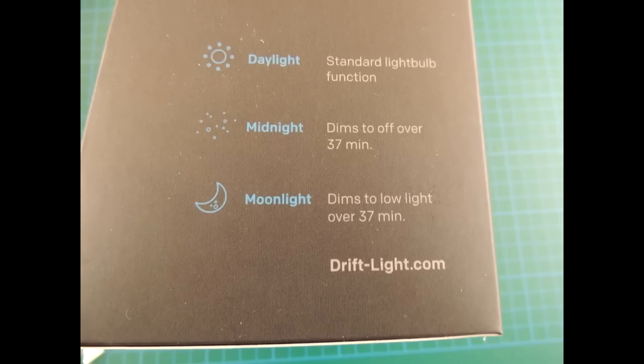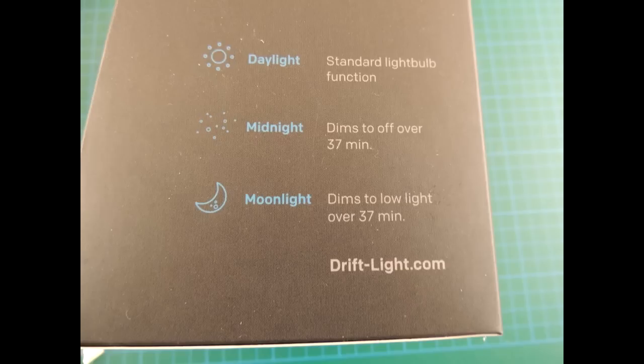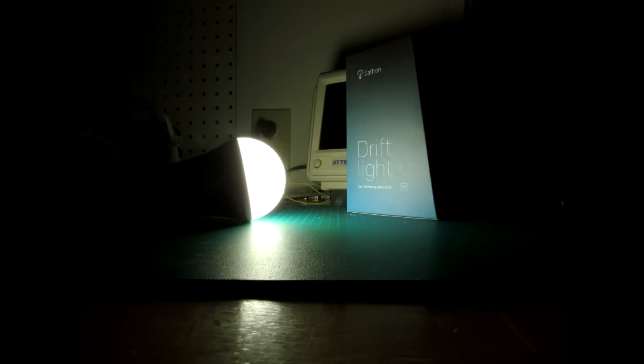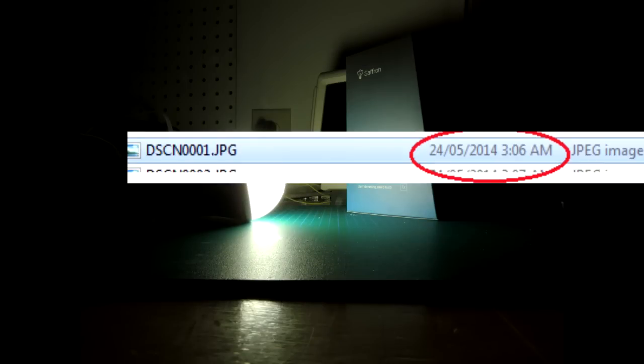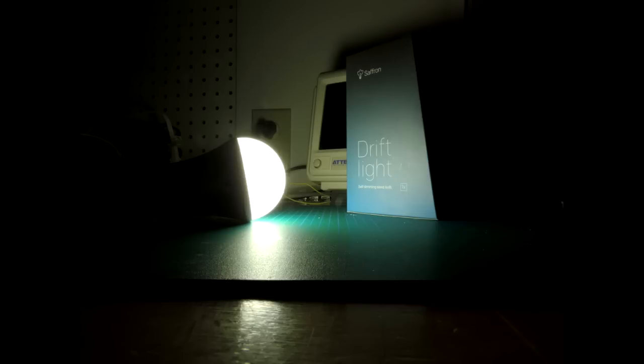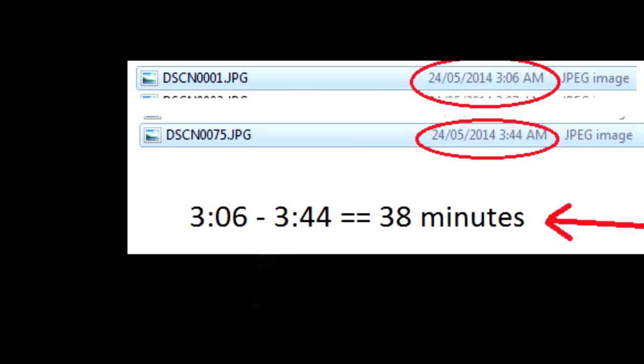The package says it's a 37-minute cycle and the vendor claims that's the typical time for a sunset. To test that, I did time-lapse photography. Here's the screenshot of the first photograph I took in 30-second intervals, and here's the last. Indeed, I measured 38 minutes, which is certainly within the resolution of the measurement. So the vendor is claiming the correct amount of time on the bulb.